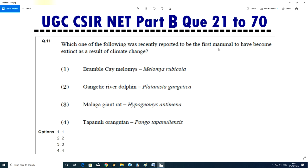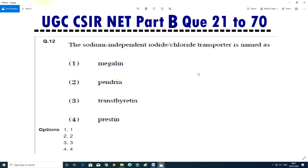Question No.11 - Which of the following was recently reported to be first mammal to have become extinct as a result of climatic change? Bramble Cay melomys, Melomys rubicola, Ganges river dolphin, Platanista gangetica, Malabar giant rat, Hypogeomys antimena, Tapanuli orangutan, Pongo tapanuliensis. Answer is 1, Bramble Cay melomys, Melomys rubicola.